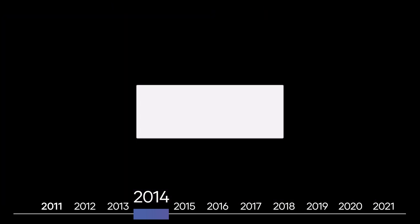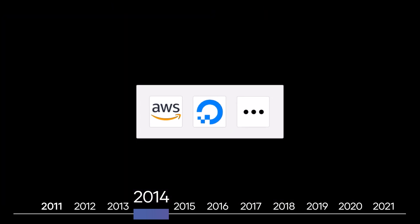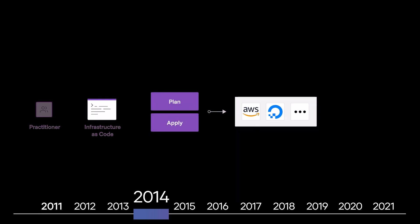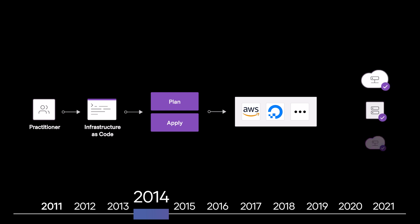Terraform 0.1 supported only AWS and DigitalOcean. The idea was just to start there and show how Terraform could support multiple providers, with a focus on expanding that in the future. The 0.1 release was more about proving the idea rather than delivering something that was production ready.